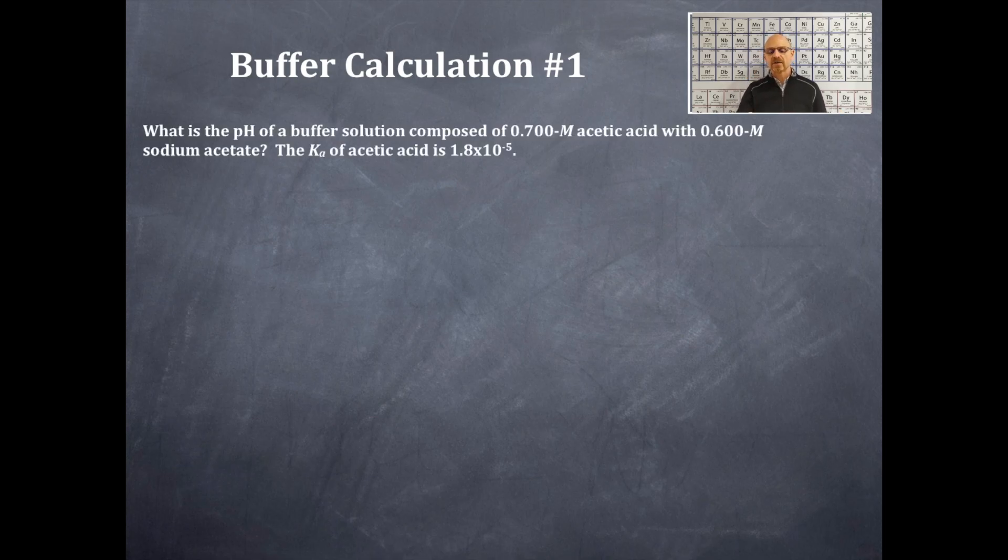So what is the pH of a buffer solution composed of 0.700 molar acetic acid with 0.600 molar sodium acetate? The Ka for acetic acid is 1.8 times 10 to the negative 5.